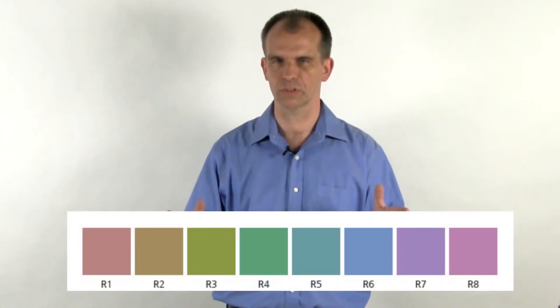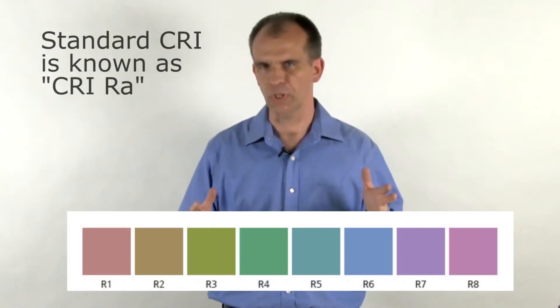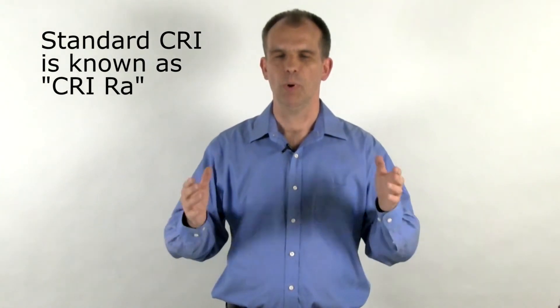So CRI works by comparing the spectrum of light to how it illuminates eight pastel colors. That's how CRI is calculated. They don't actually illuminate the colors anymore, but the spectrum is analyzed to see how accurately it renders those eight colors. And then the score is assigned from 0 to 100.